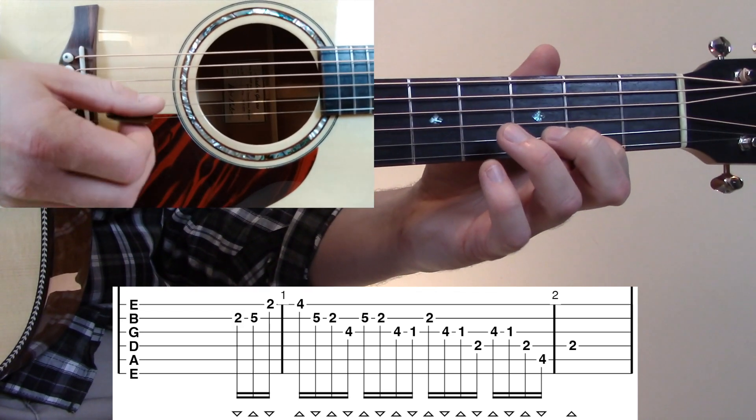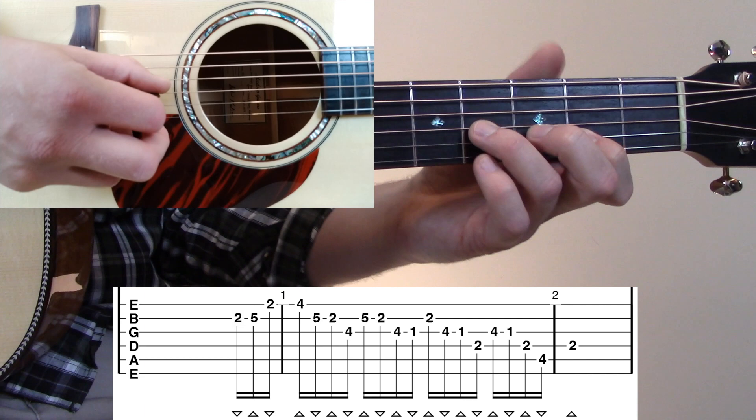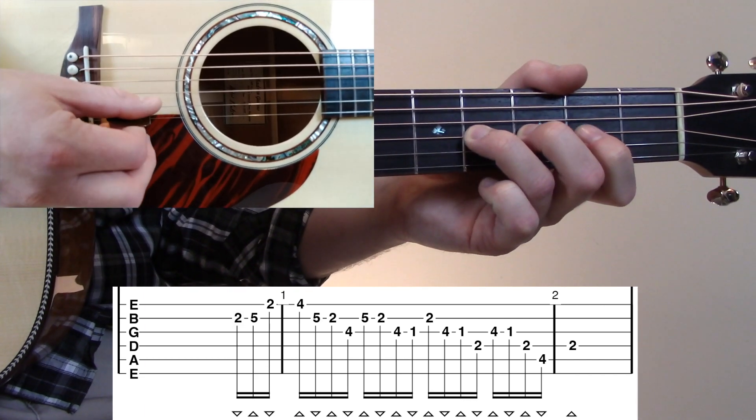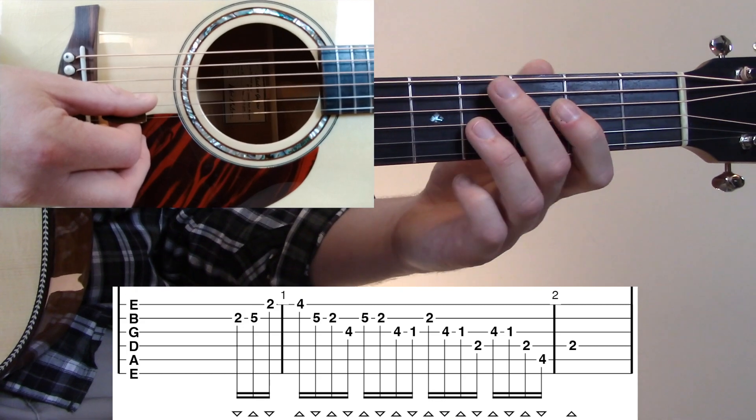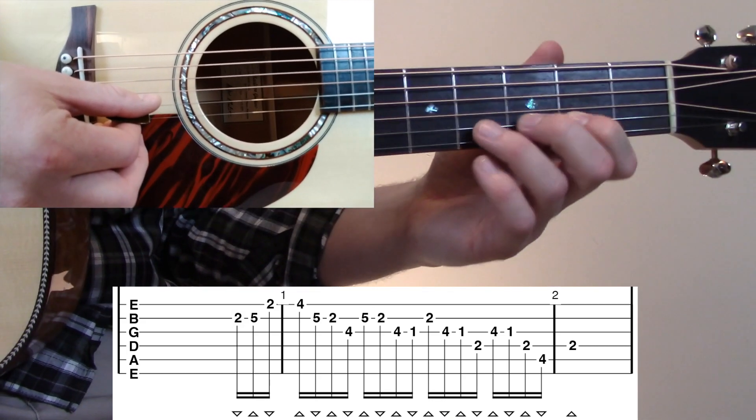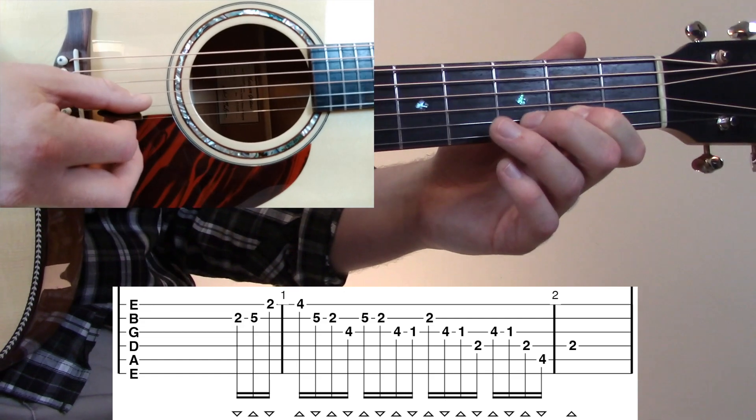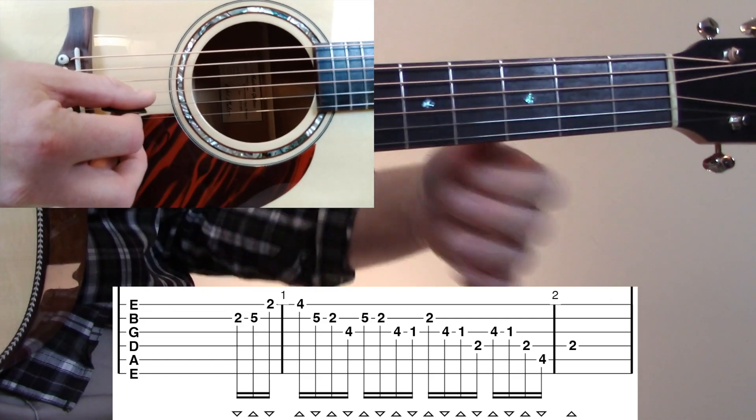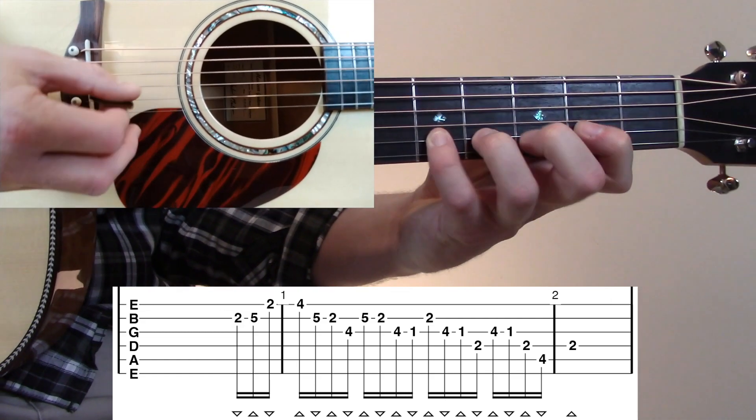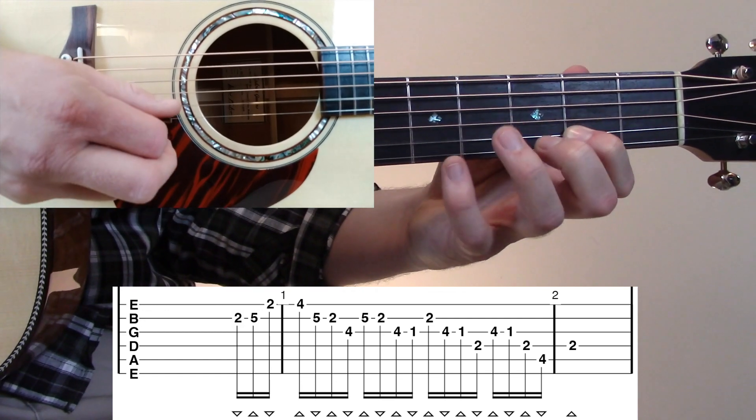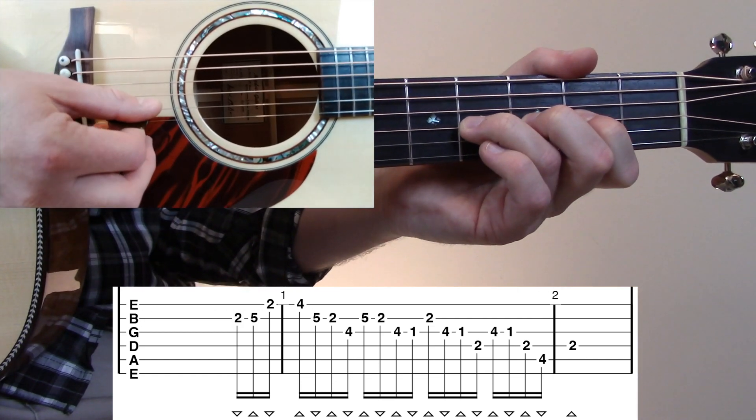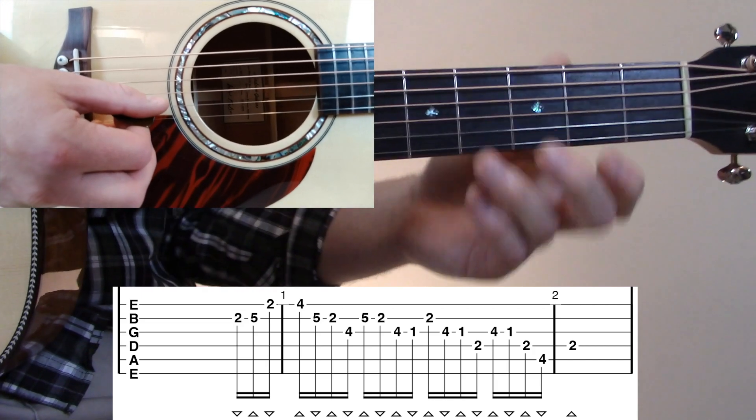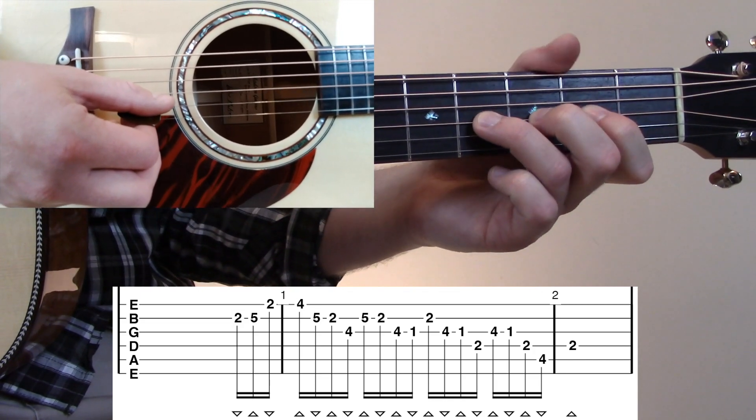After that 2nd fret B, we're going to place our ring finger on the 4th fret G. What we've done there with those six or seven notes is we've played some jazzy intervals. Those intervals you'll hear a lot in jazz music and bebop music. In our case, we're just going to be playing it over a simple E major chord.